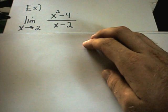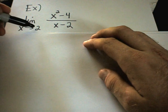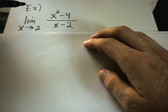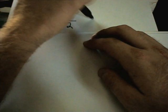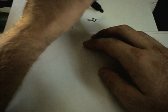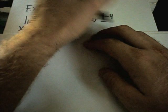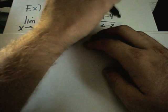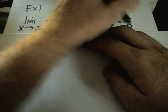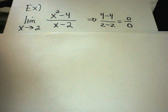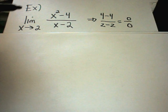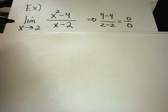So to get started, you always try to substitute it in and see what you get. So if I plug in x equals 2, notice I get 2 squared, which is 4, minus 4 over 2 minus 2. I'm getting this form 0 over 0, which means we're going to have to be a little more creative and figure something else out.